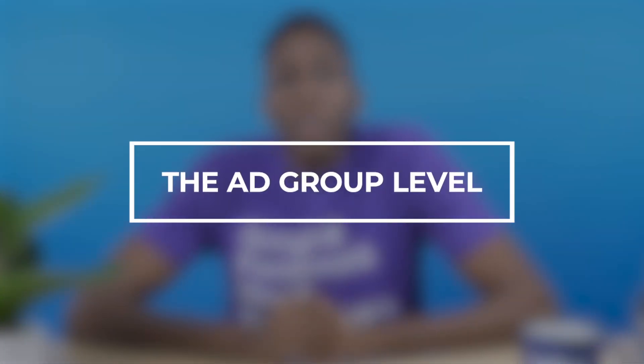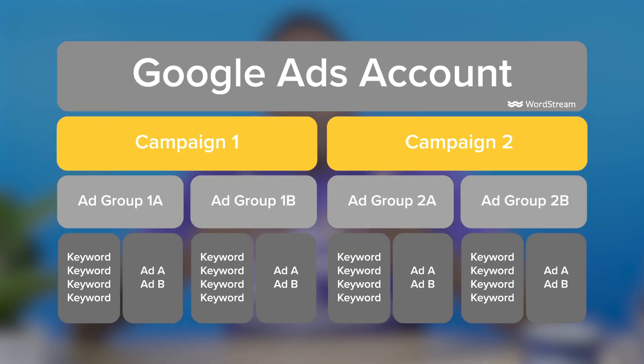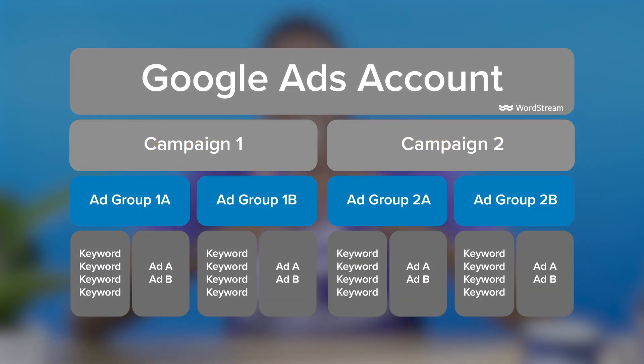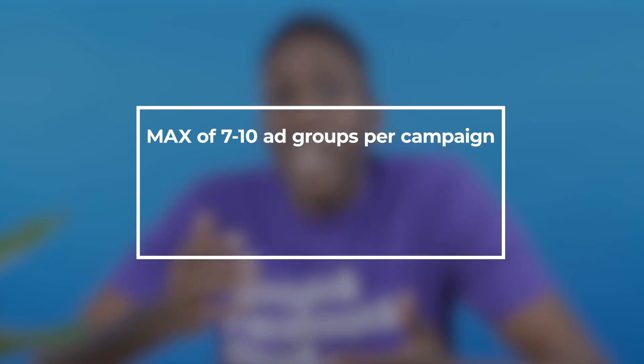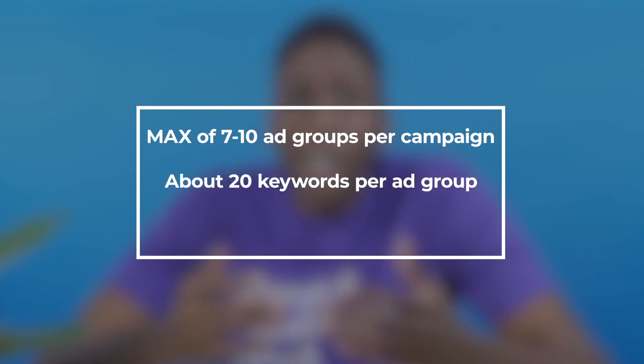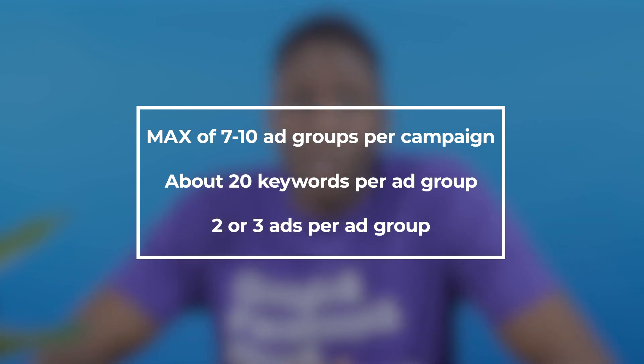The ad group level. What do ad groups accomplish? One level below campaigns in your Google Ads account structure is ad groups. They create structure within each campaign, control keyword and ad association, and are generally organized by theme. There should be a max of seven to ten ad groups per campaign, about 20 keywords per ad group, and two or three ads per ad group. These are solid guidelines to make sure your ad groups don't get bloated and hard to manage. At the ad group level, you will set your bids for specific campaigns.